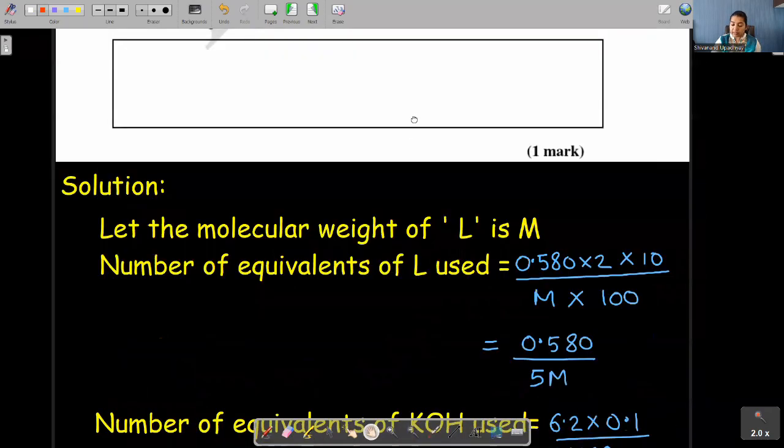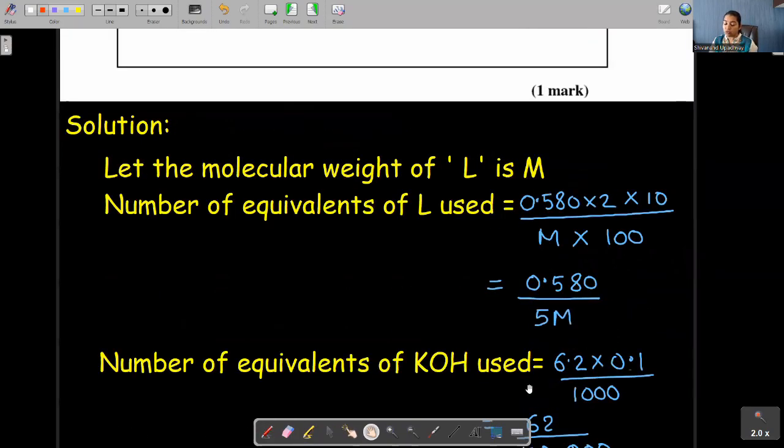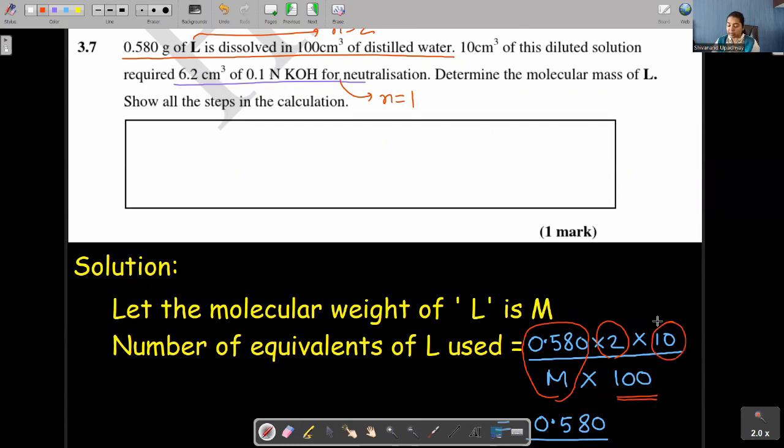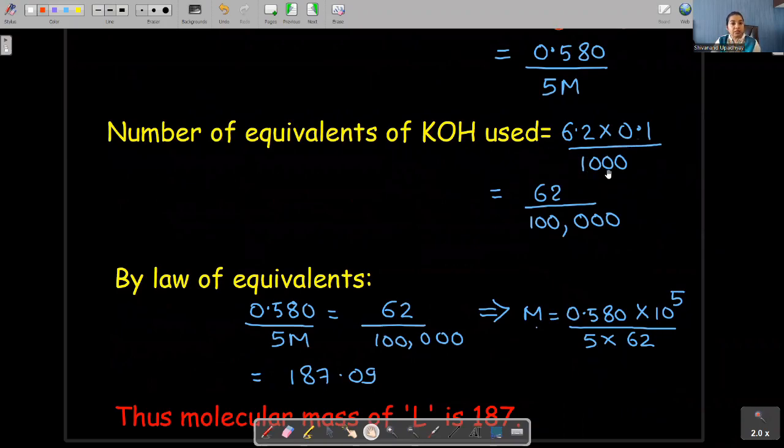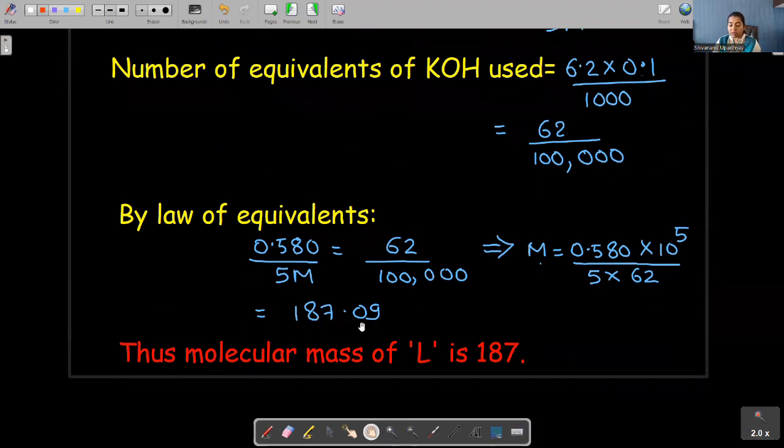Let us see the solution. Let us assume the molecular weight of L is M. Number of equivalents of L used will be 0.580 × 2. Why am I taking this? Because 0.580 upon molar mass, this is the number of moles. Multiplied by n-factor will be the number of equivalents present. Now, these are dissolved in 100 cm³. So I took that in denominator and 10 cm³ of this solution was taken for experiment. So multiplied by 10. Number of equivalents of KOH used is 6.2 × 0.1 upon 1000 because the normality value is given and the volume given is in ml. So total number of equivalents of KOH is 62 upon 10⁵. Now, by law of equivalents, the number of equivalents of acid should be equal to number of equivalents of base. So I will equate and by solving this equation, you will get the value of molecular mass of L to be 187.